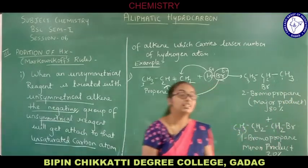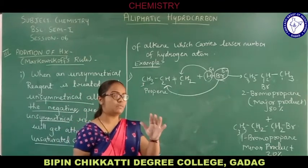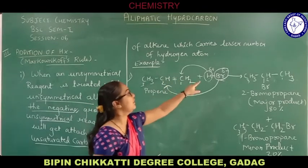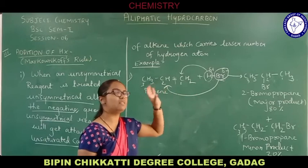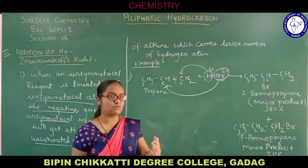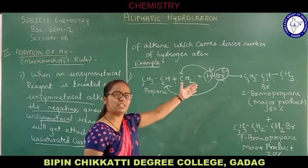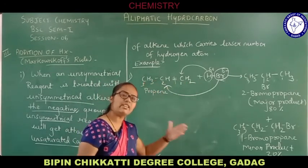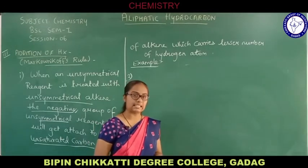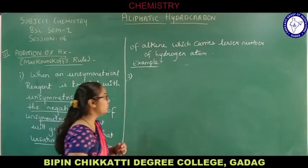This is how the Markovnikov rule is applicable. In terms of hydrogen atoms: the carbon which is having more number of hydrogen atoms, the hydrogen atom will go and get attached there. Rich become richer in terms of hydrogen atom in Markovnikov's rule. The negative terminal will go towards that carbon which has the lesser number of hydrogen atoms.